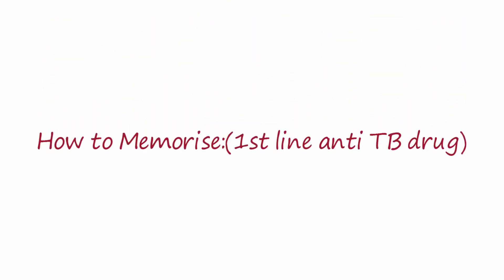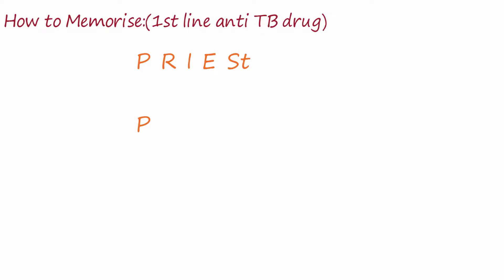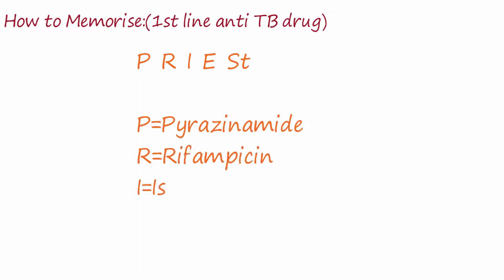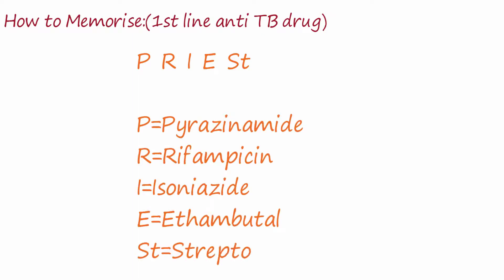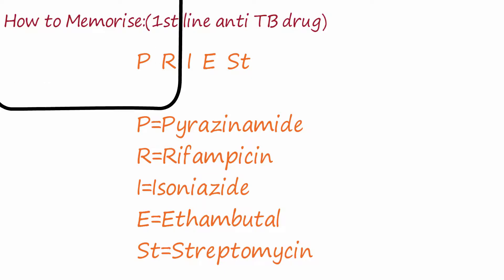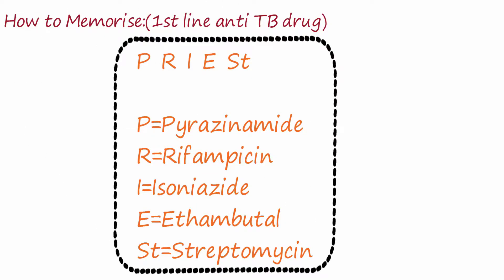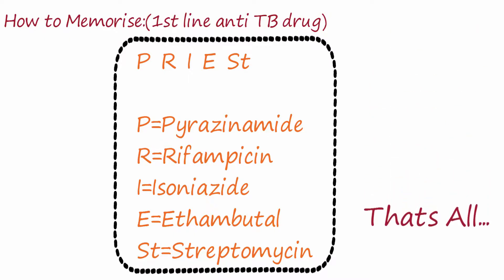To memorize first-line anti-tubercular drugs, use the mnemonic PRIES: P for pyrazinamide, R for rifampicin, I for isoniazid, E for ethambutol, and S for streptomycin. And that's all.